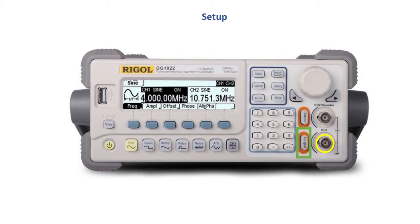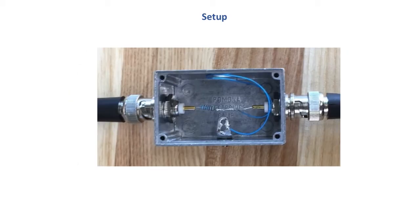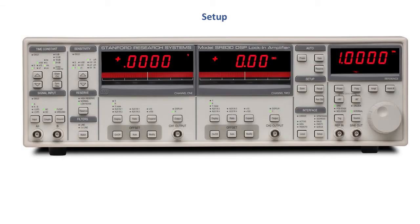Then we connect channel one into the left side of the metal box. Then the right side of the metal box with the BNC connector we connect that to the lock-in. We connect that right to channel A in the bottom left hand corner. So now we're interested in taking some measurements.